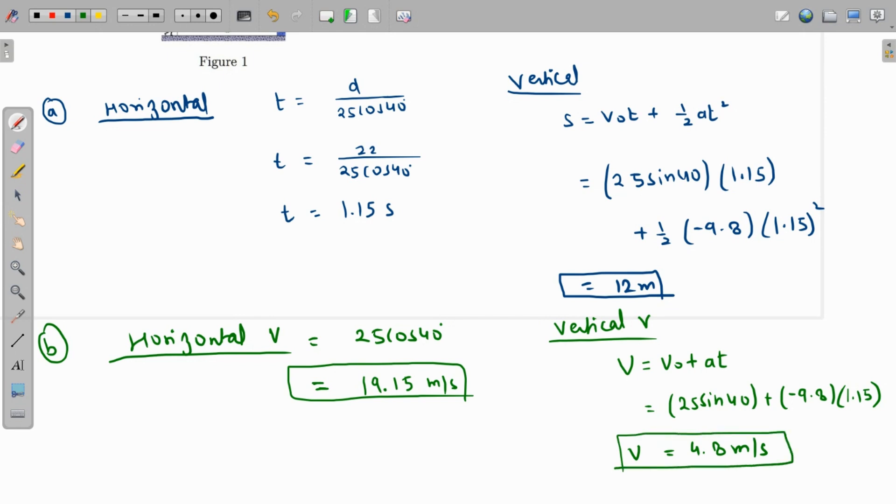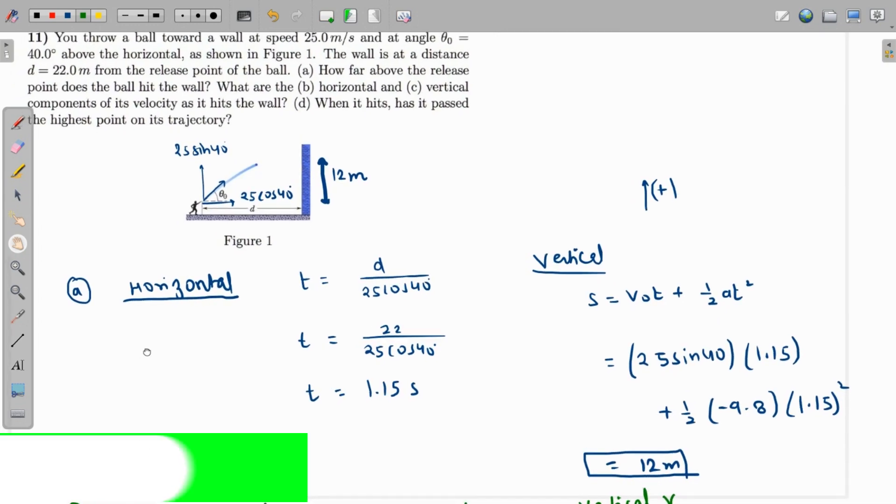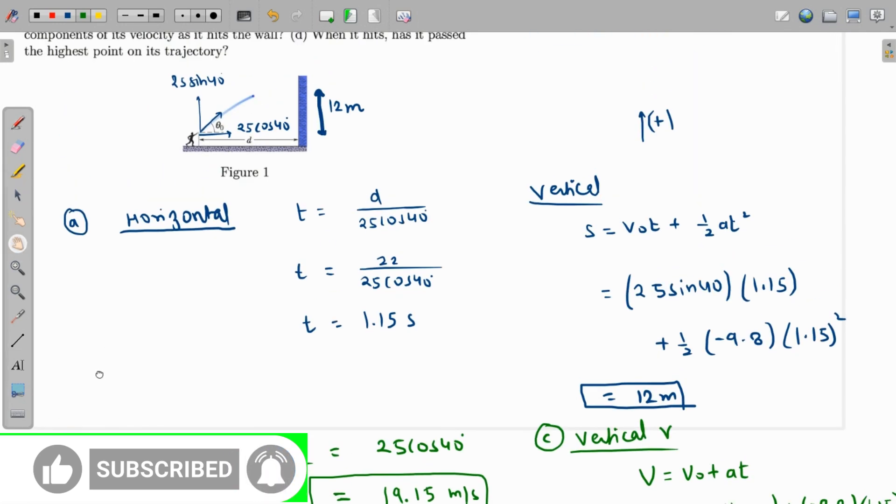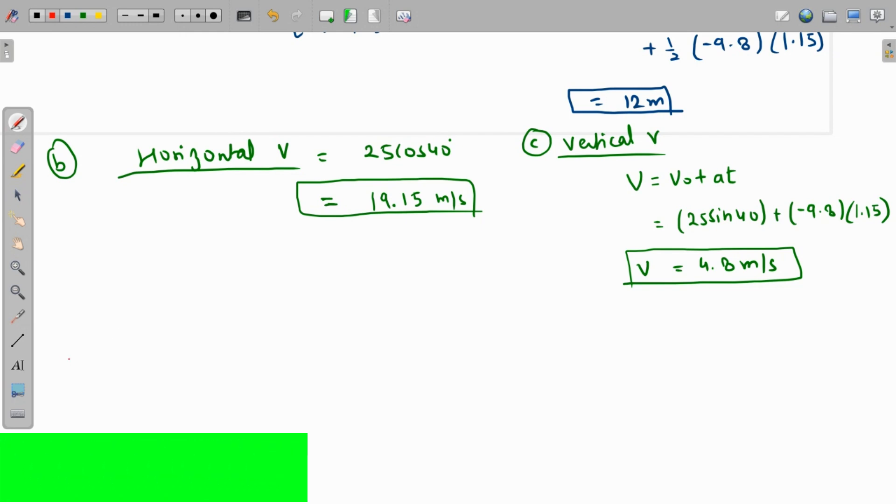And in part c, okay, b and c are the vertical and horizontal, horizontal and vertical respectively, which we found. And has it already passed the highest point of its trajectory? So the time at which it passes through the highest point is given by v naught sine theta over g. It's actually half of the total time of the projectile, so it's half of two v naught sine theta over g.